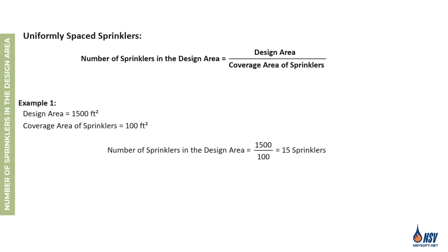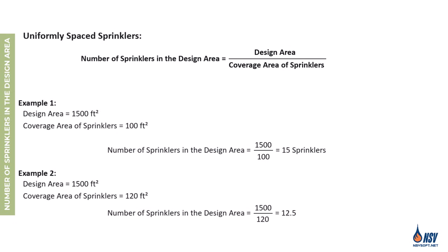For instance, if the design area remains 1,500 square feet but each sprinkler covers 120 square feet, dividing 1,500 by 120 gives us 12.5. In this case, we round up to 13 sprinklers to meet the design requirements.